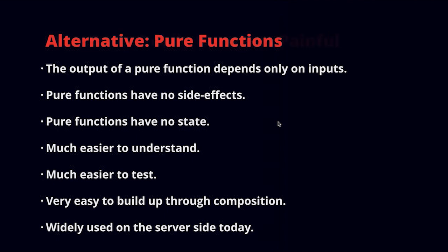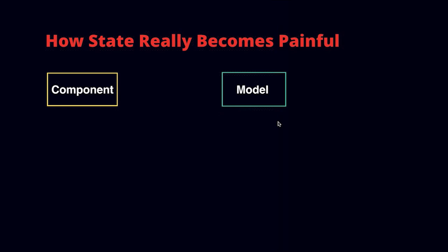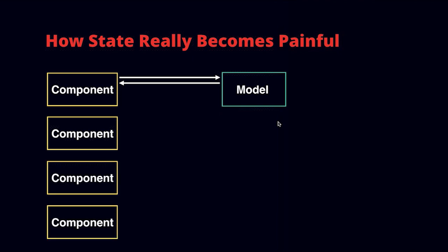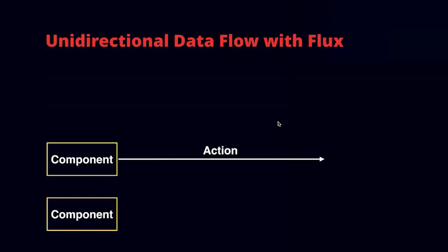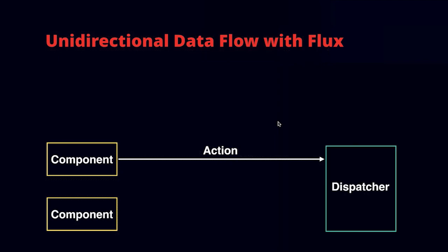Coming back to a typical application: you have a component and a model — the classic MVC approach. The component updates the model, the model sends information back. This is fine, but it gets messy with more components and models where everything changes everything. The general direction many companies are going today is unidirectional data flow with Flux. Redux can be seen as a Flux implementation, or as taking the key ideas of Flux to their logical conclusion.